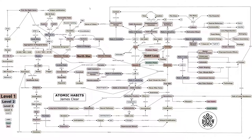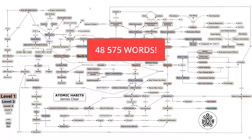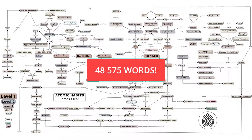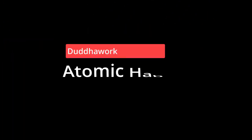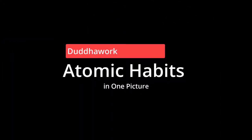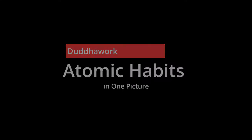In this video, we're going to explore the mind map I created for Atomic Habits, written by James Clear. Basically, we're going to summarize 48,575 words into one picture. My name is Olivier and I'm a certified math and physics teacher in Ontario who is currently doing a master's in statistics at Carleton University.